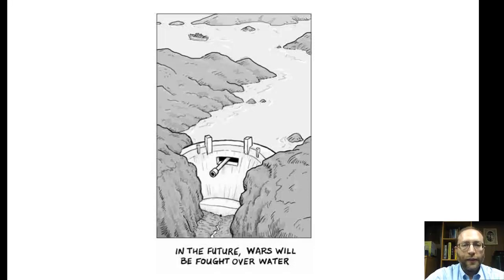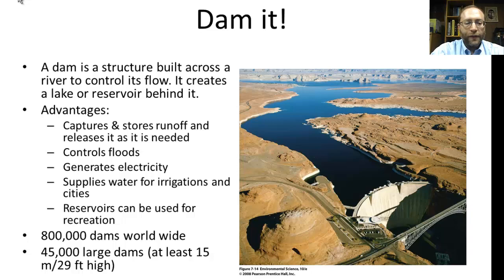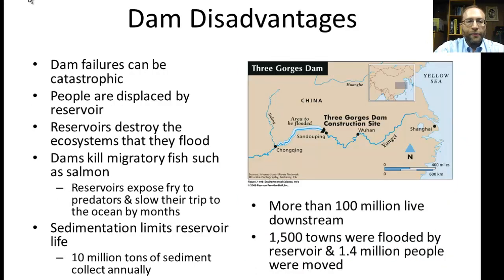So what can we do to address these water shortages? One solution is to build a dam. A dam is a structure built across a river to control its flow, creating a lake or reservoir behind it. It has several advantages: it captures and stores runoff and releases it as needed — especially useful when rainfall is unpredictable. It controls floods, generates hydroelectric power that doesn't pollute, and supplies water for irrigating farms and cities. Reservoirs can also be used for recreation, boating, and fishing.